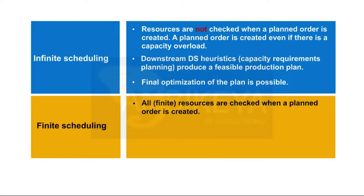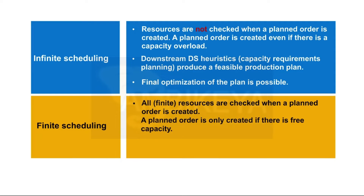The availability of the capacities required for production is checked when a planned order is created during planning with finite scheduling. The planned order can only be created when sufficient capacity is available. If no capacity remains for the required time, the planned order is created later, when capacity is available, and this delay is indicated by a corresponding alert.